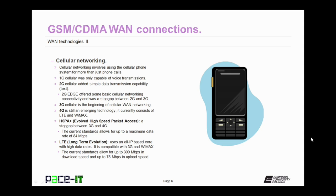3G cellular is the beginning of cellular WAN networking. It's giving way to 4G cellular, which is still an emerging technology. 4G currently consists of both LTE and WiMAX. As a special mention, we need to talk about evolved high-speed packet access, which is HSPA+. It was a stopgap between 3G and 4G networking, and it's still available today. The current standard for HSPA+ allows for up to a maximum data rate of 84 megabits per second.